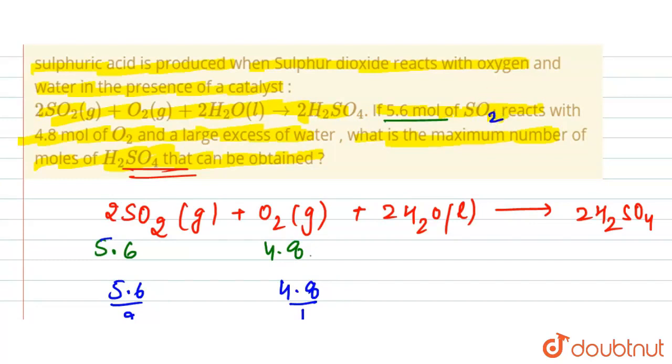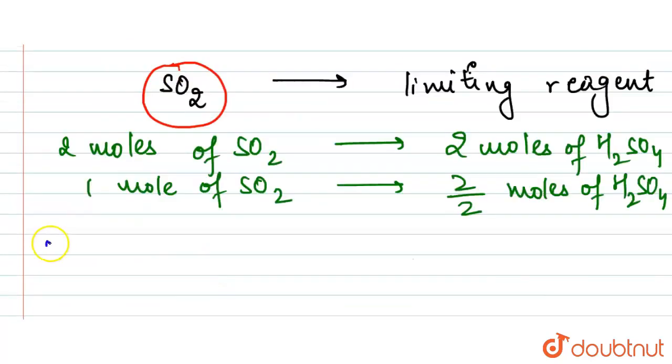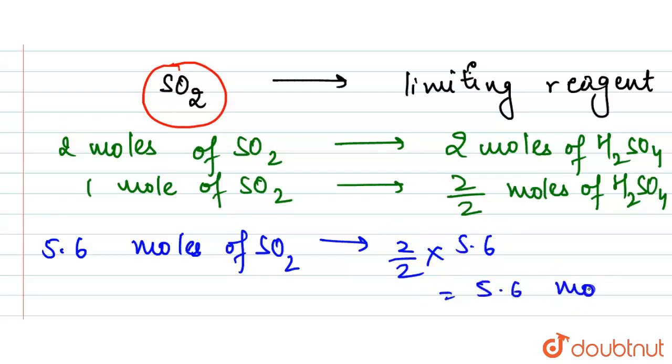So now here if we have 5.6 moles of SO2, then it will give us 2 upon 2 times 5.6, that is equal to 5.6 moles of H2SO4.